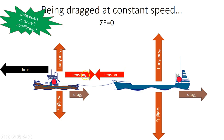They both pull on different objects. So here the tension in the cable is pulling the big ship forwards, and here the tension in the cable is pulling the tugboat backwards. In fact, they're acting on different parts of the cable. So the front of the cable pulls the back of the cable forwards, and the back of the cable pulls the front of the cable backwards.